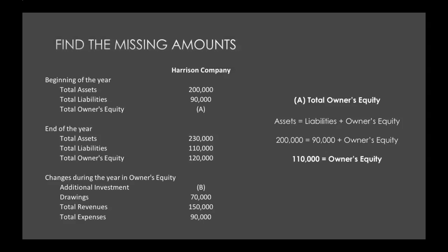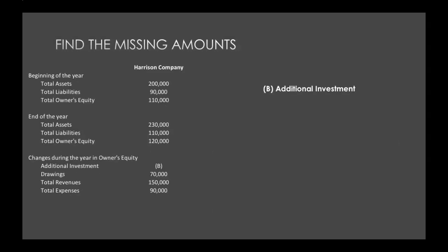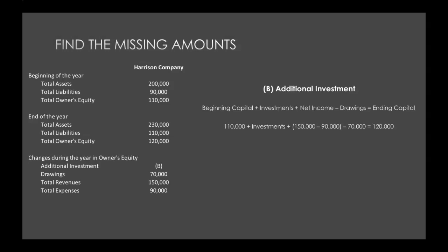Now we also need to figure out this additional investment — this one's going to be a little bit more work. So we're going to plug in the numbers that we know. At the beginning, that was $110,000 — that's what we just solved for — plus our investments. We don't know this investment amount; that's what we're looking for.